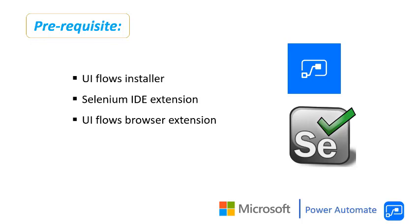Now we will see what the prerequisites are to create UI Flows. First of all, we require to download the UI Flows installer and then install it on the system. Then we need to install the Selenium IDE extension for the browser, and also the UI Flows browser extension, and we need to activate the UI Flows browser extension as well.